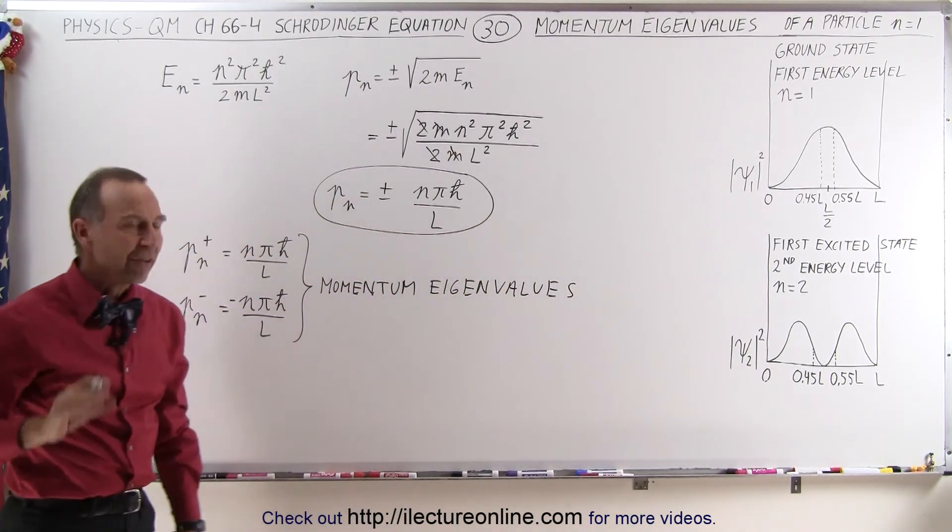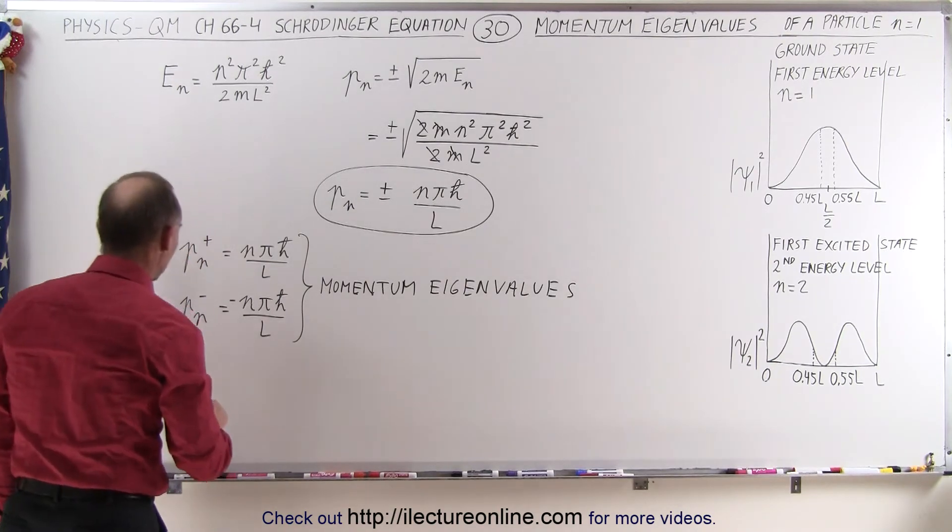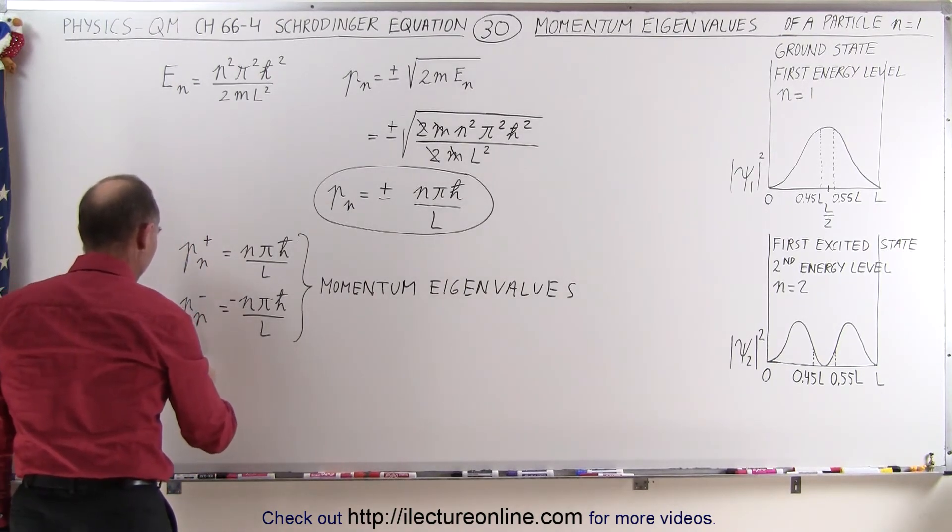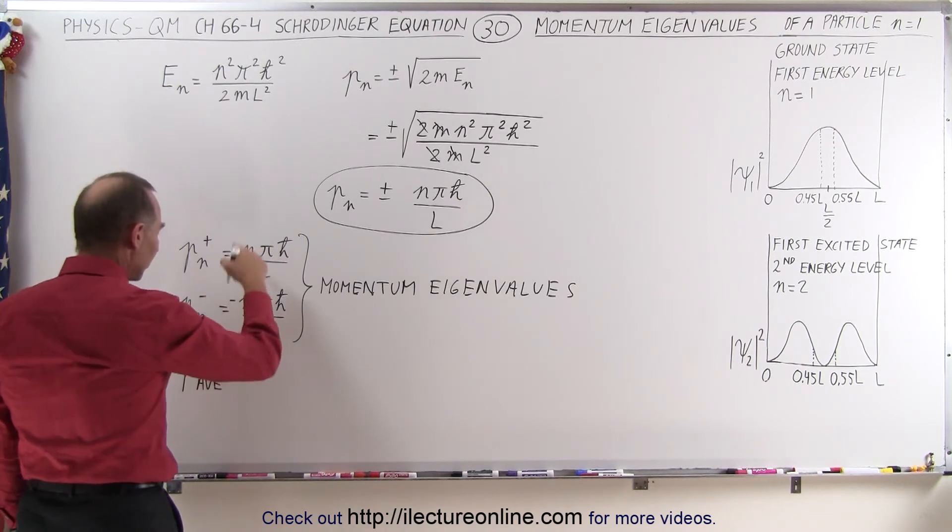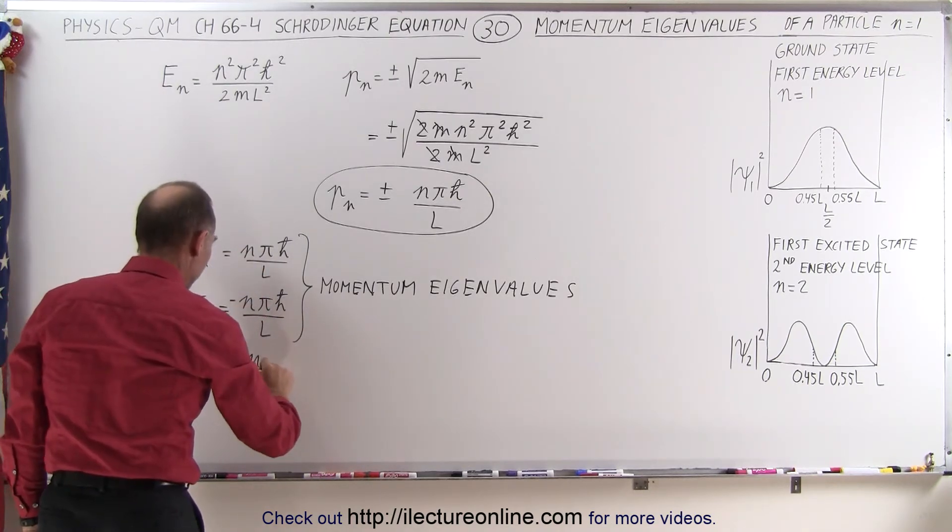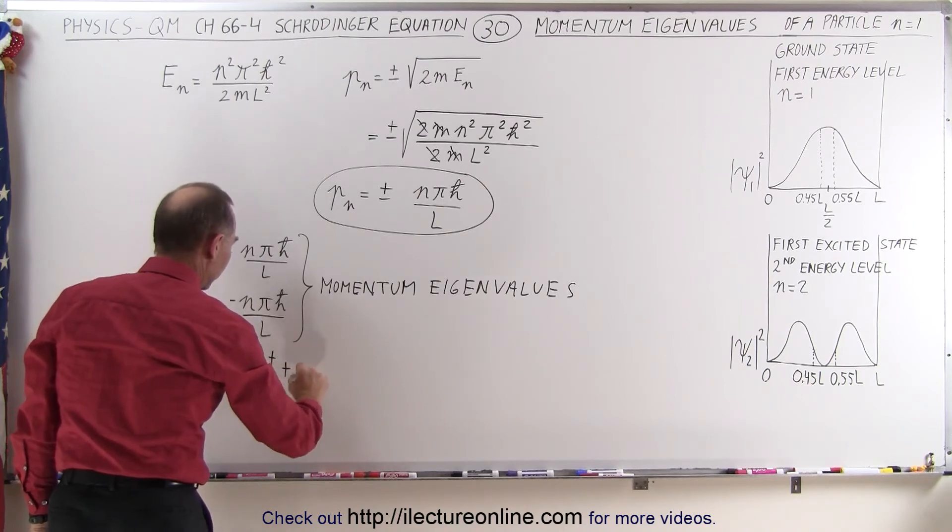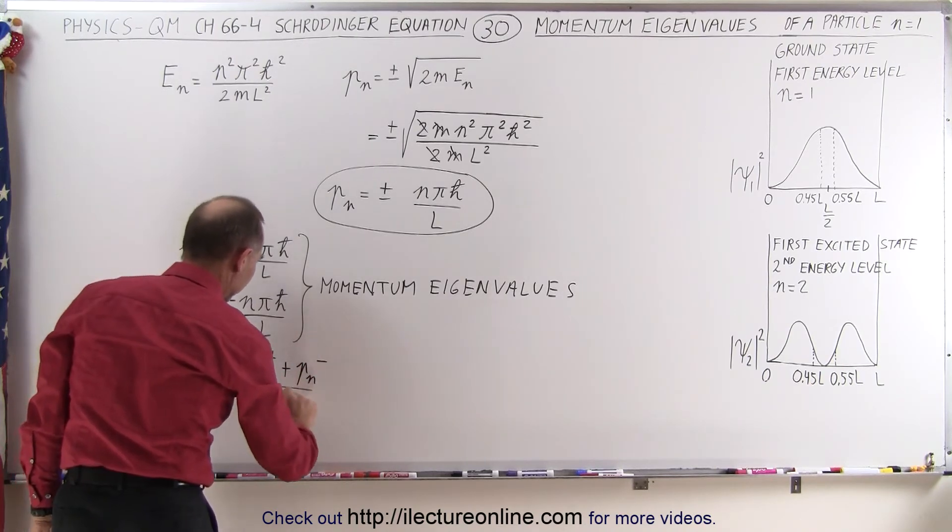Now let's take the average value of those two eigenvalues. So the momentum average is going to be the sum of the two, so it's going to be p sub n plus plus p sub n minus divided by 2.